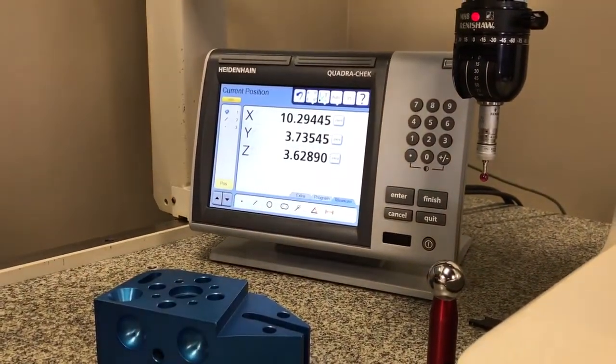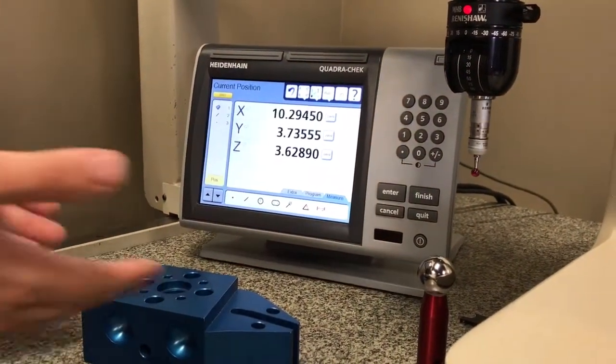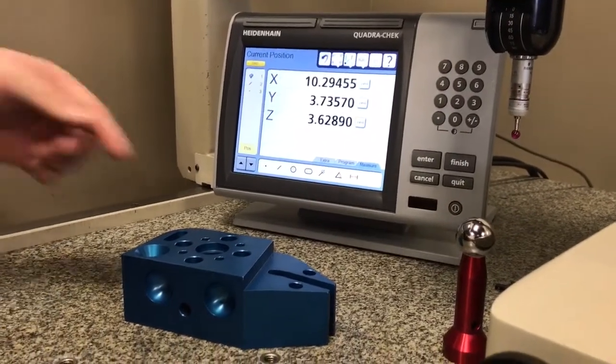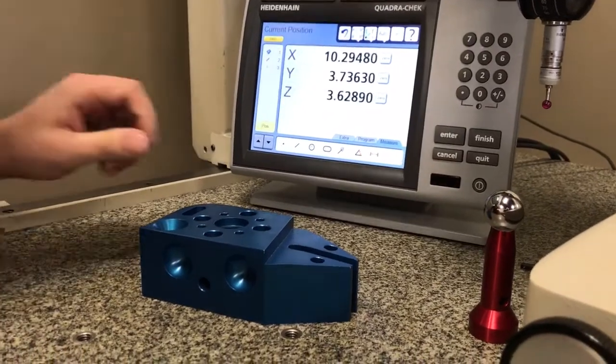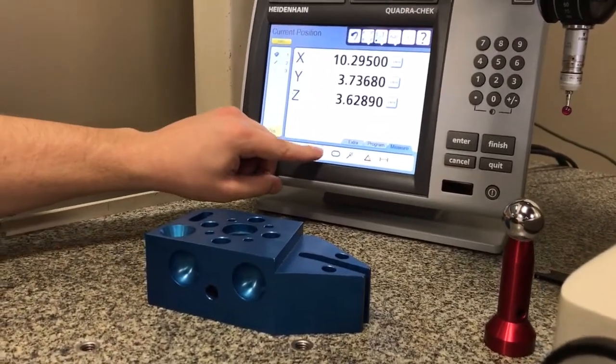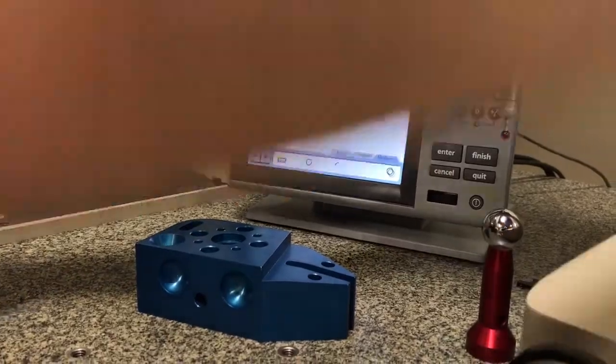So now I can go ahead and measure many features on this widget. For example, let's do this quarter inch diameter circle right here. I'm going to press on circle on the screen and measure this.